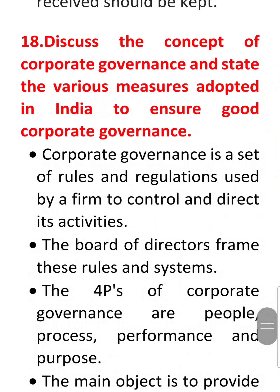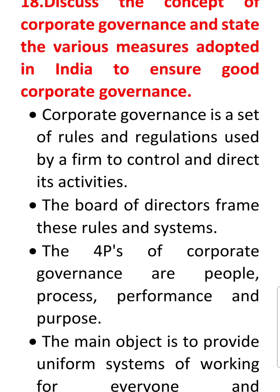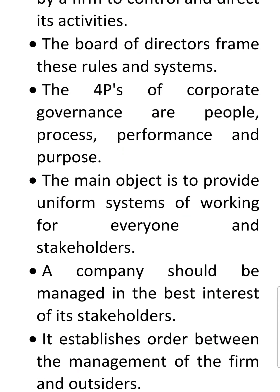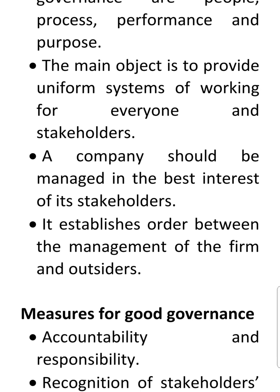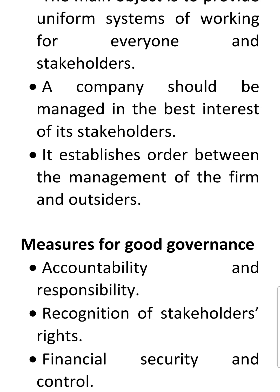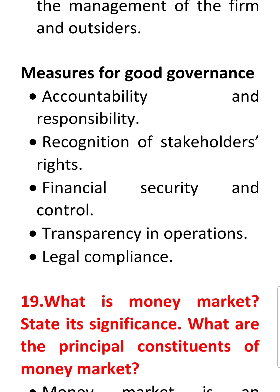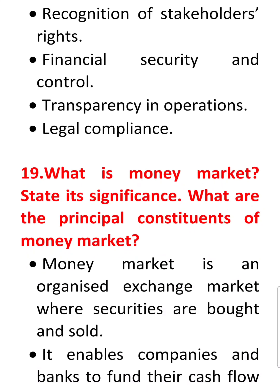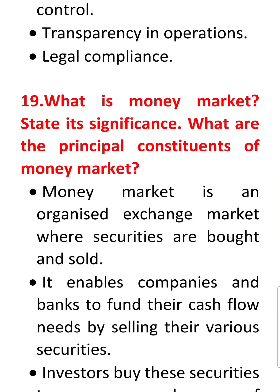The next question: corporate governance and the measures adopted in India to ensure good corporate governance. Corporate governance is a set of rules and regulations used by a firm to control and direct its activities. The board of directors prepares these rules, and it believes in four Ps: people, process, performance, and purpose. The main objective is to provide a uniform system of working for all stakeholders. Measures for good governance include accountability and responsibility, recognition of stakeholders' rights, financial security, transparency in operations, and legal compliance.